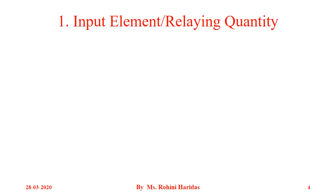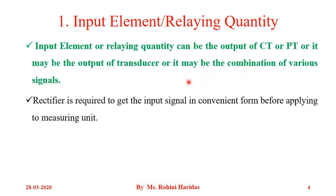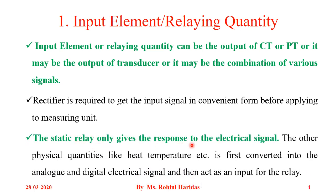The first one is the input element and the relaying quantity. The input element or relaying quantity can be the output of the CT or PT, or it may be the output of a transducer, or it may be a combination of various signals. A rectifier is required to get the input signal in a convenient form before applying it to the measuring unit. A static relay only gives response to electrical signals; other physical quantities like heat and temperature are first converted into analog and digital electrical signals and then act as input.